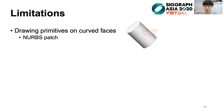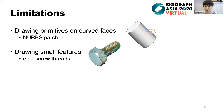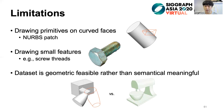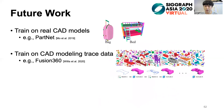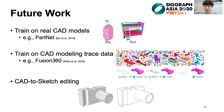There are limitations of our system. For example, we do not support drawing primitives on curved faces — one possibility would be to use NURBS as the modeling primitives. We do not support drawing small features, such as screw threads. Another limitation is that our dataset is geometrically feasible rather than semantically meaningful. In the future, we would like to train our network on more realistic datasets such as PartNet, and also on CAD modeling trace data such as the Fusion 360 dataset. Another inspiring direction is to use NPR to go back to the sketch domain and allow users to freely alternate between the two representations.